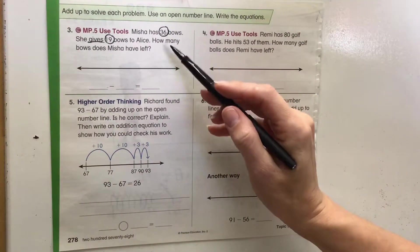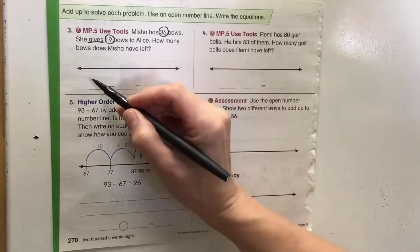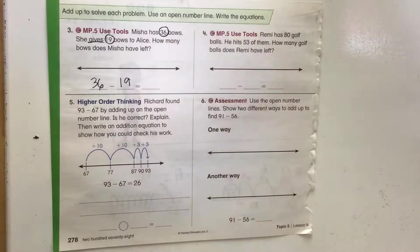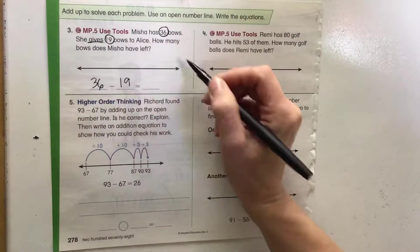Actually, you know what, I'm just going to keep it the regular way because we've got our equation here. 36 minus 19 equals a number that we need to figure out. So if we want to, start at 19 and count up to 36.